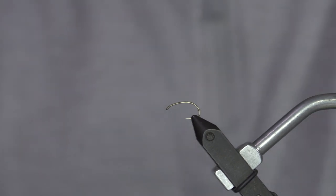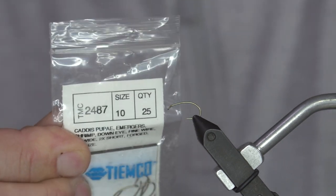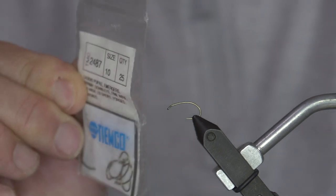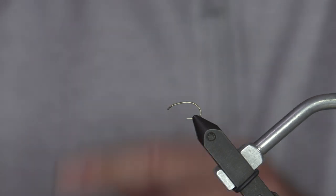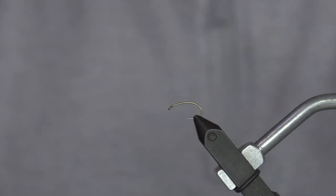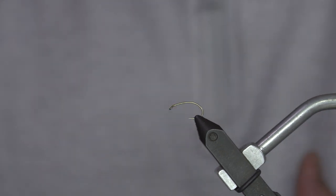To start off with, we are tying on a Tiemco 2487 hook. I like that rounded back scud shape because it gives me a wider gap for a beetle. If you tie it on a standard dry fly hook that's fine. You can tie it on a flat dry fly hook too. Beetles are round. They're bulbous.